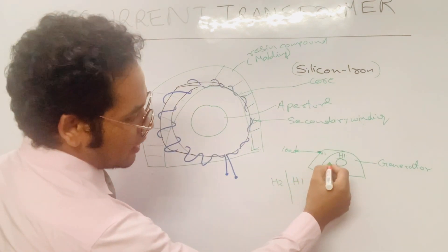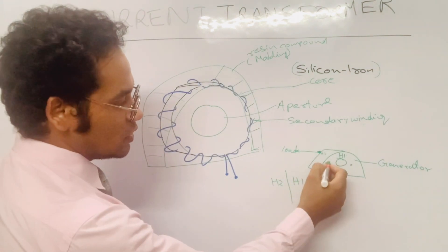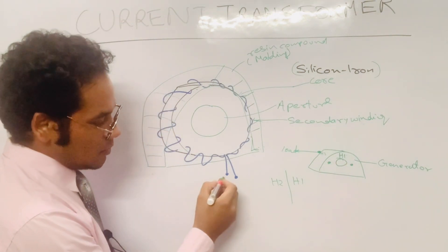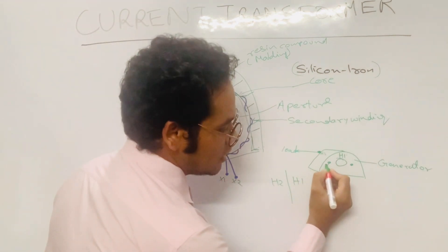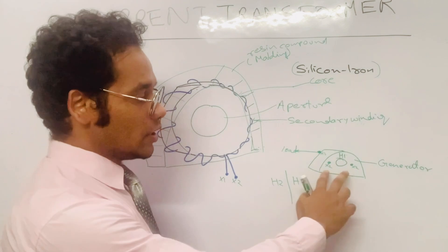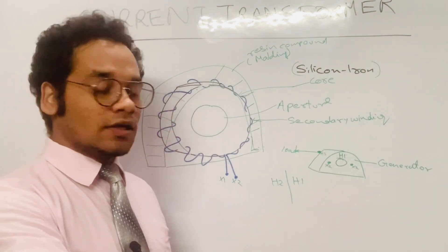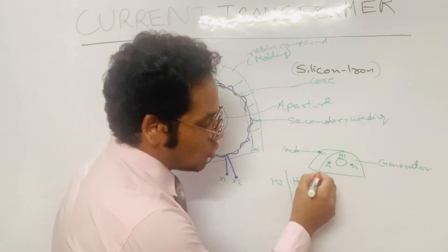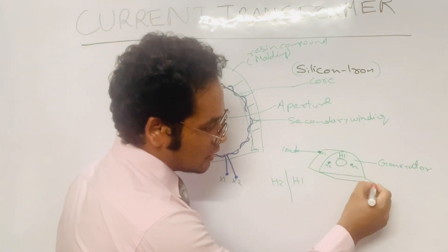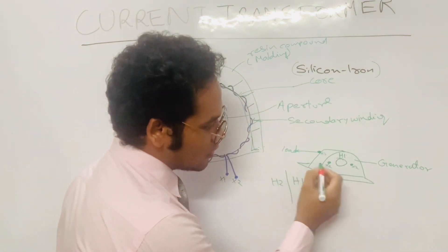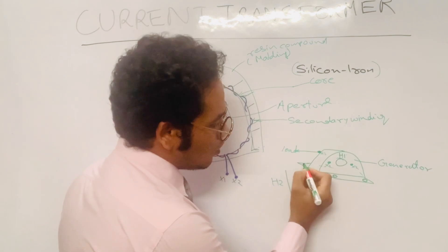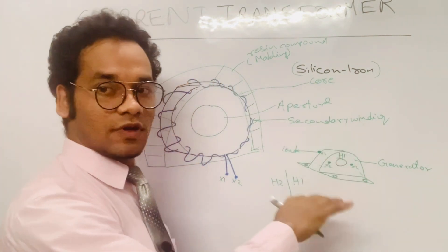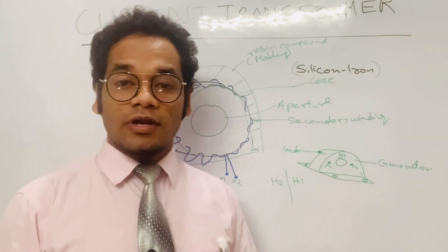There are two terminals, X1 and X2, which are the metallic terminals from where you can take the output of this current transformer. There is also a base plate with holes so that you can put mounting bolts and fix it into the structure.